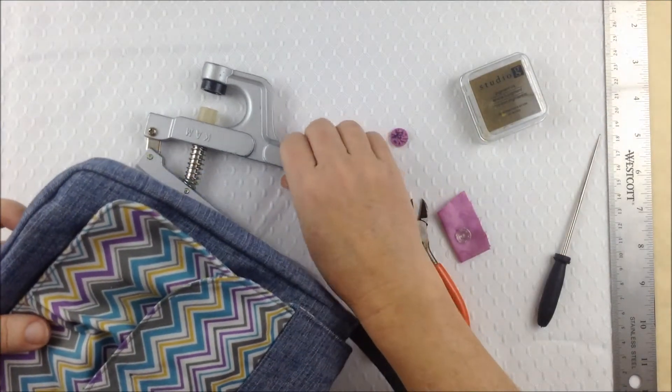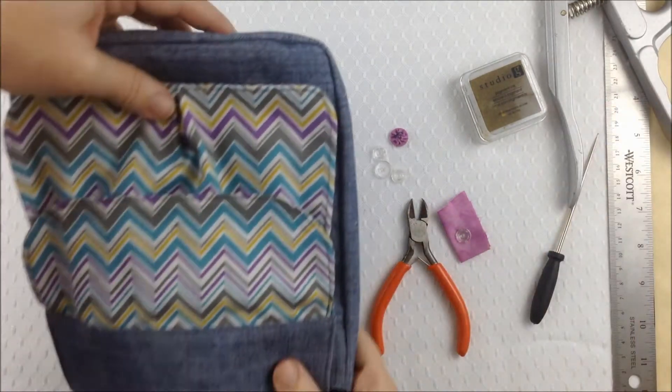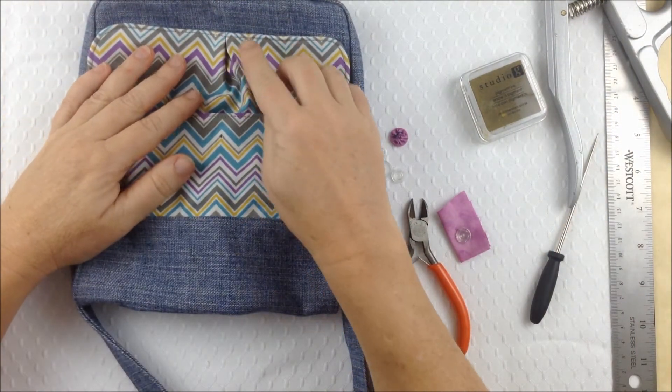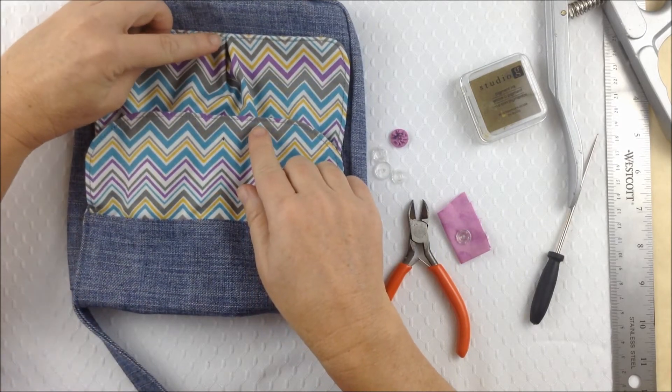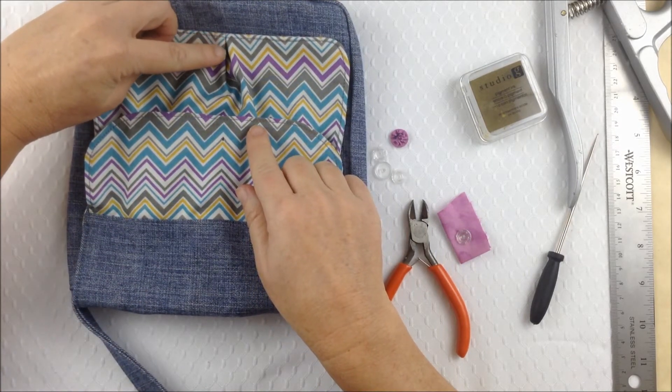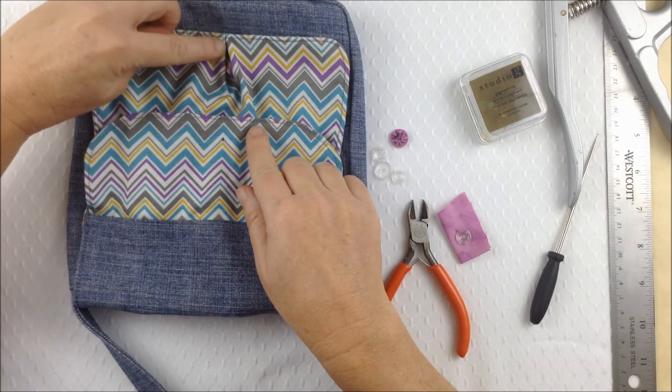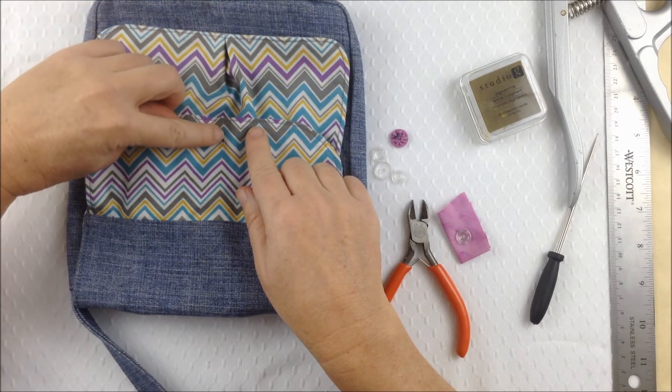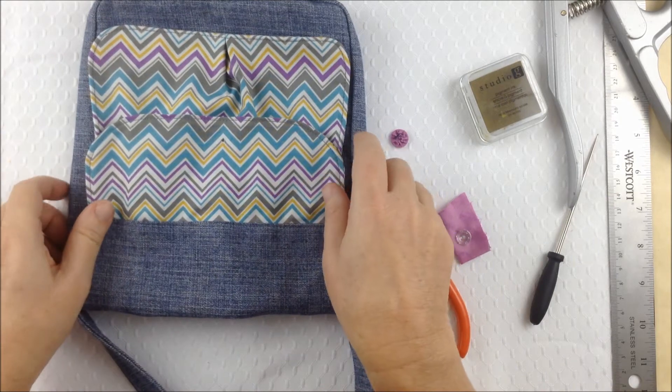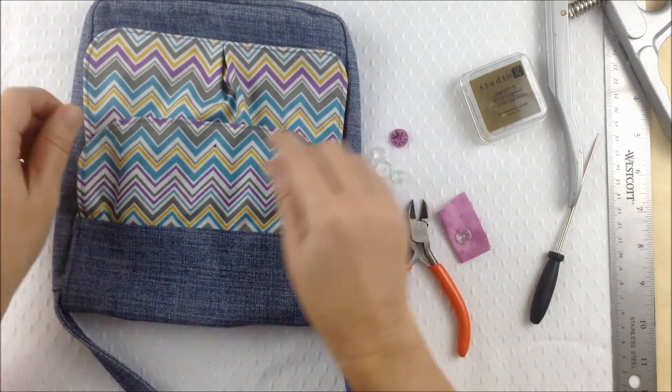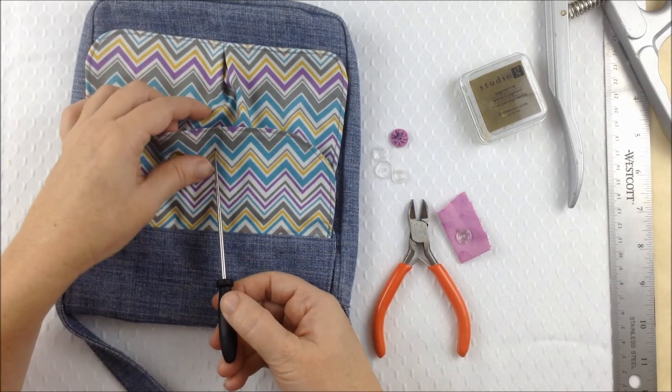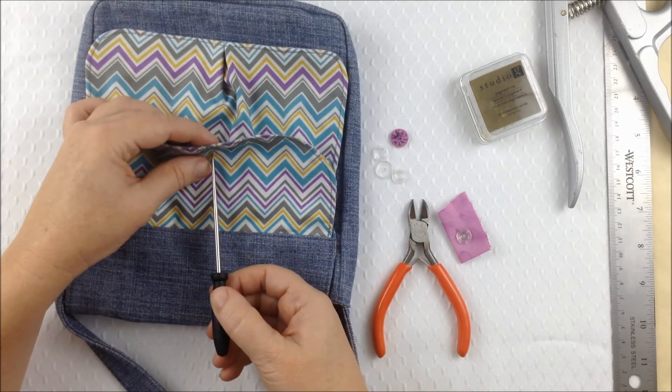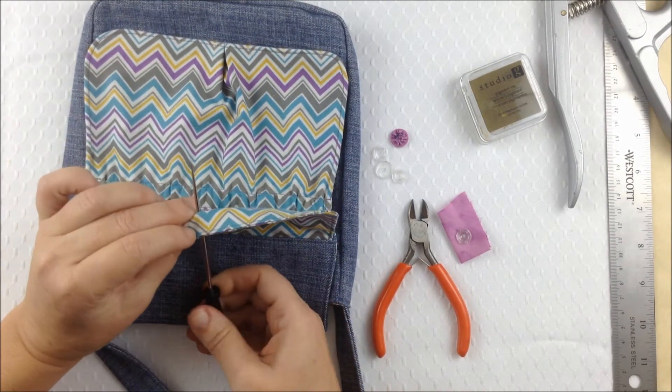So we've got the purse here. And I've already marked where I want my snap to go. So I eyeballed this according to that pleat there. But you can also measure it if you so desire. So I've marked that and we take our pointed tool and we push that through the mark that you've made.